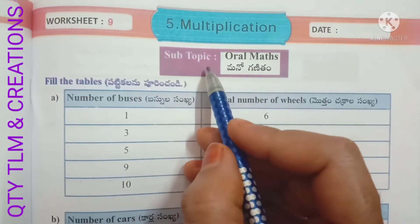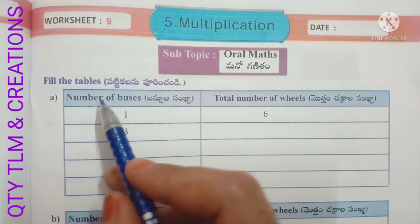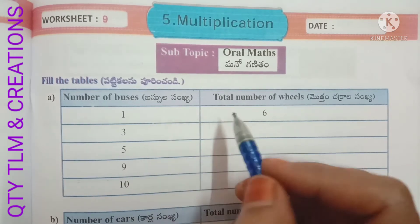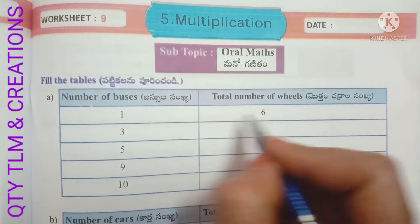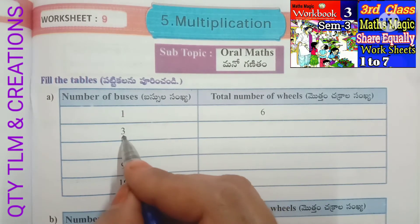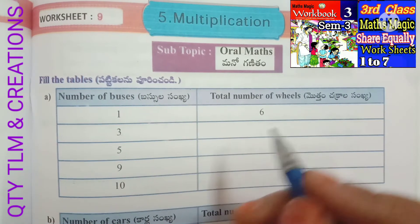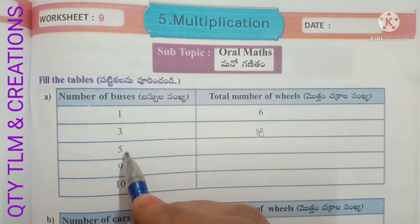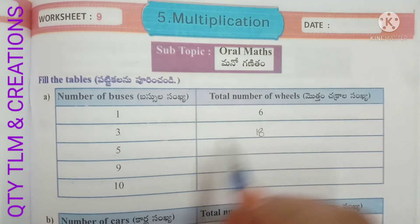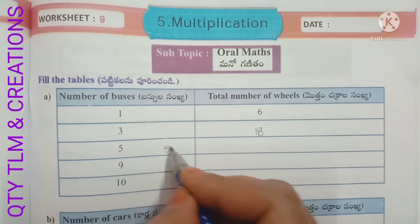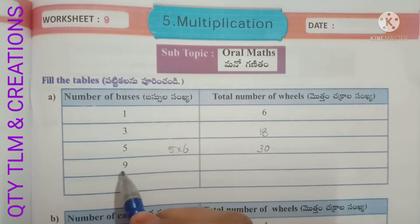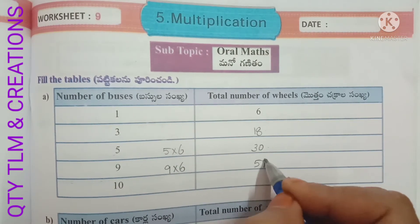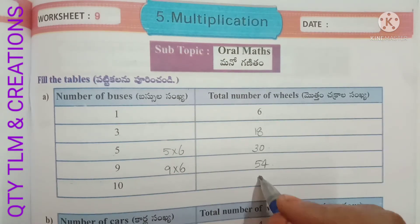Next, worksheet number 9, subtopic: oral maths — fill the table. A: number of buses and total number of wheels. 1 bus has 6 wheels: 1 into 6 equals 6. 3 buses: 3 into 6 equals 18 wheels. 5 buses: 5 into 6 equals 30 wheels. 9 buses: 9 into 6 equals 54 wheels. 10 buses: 10 into 6 equals 60 wheels.